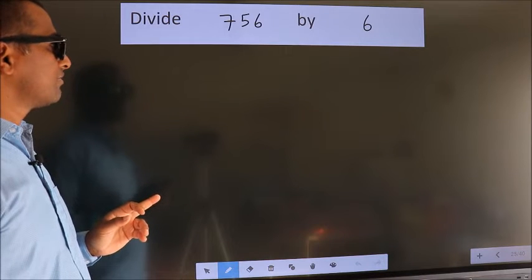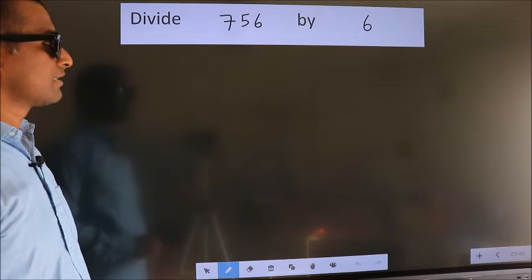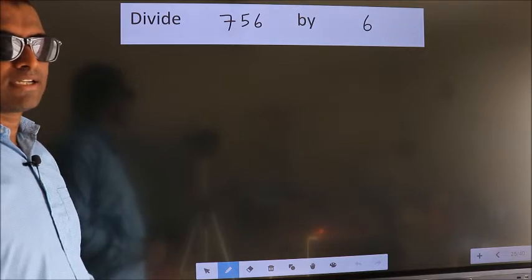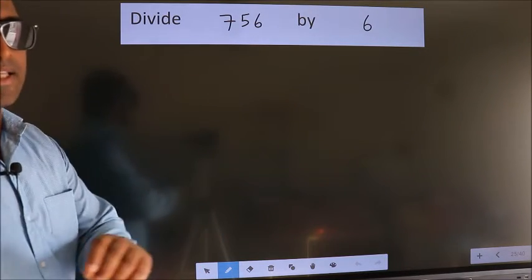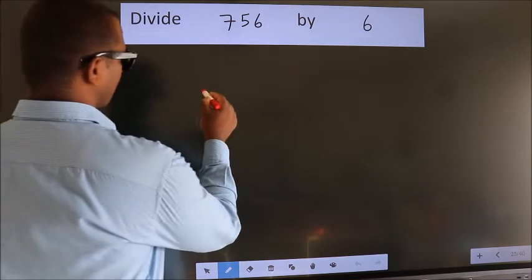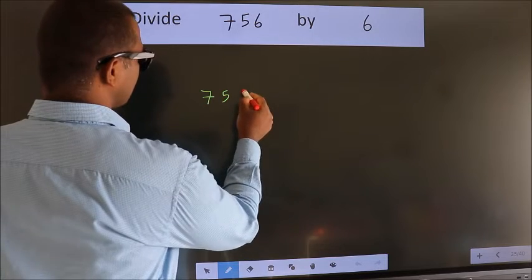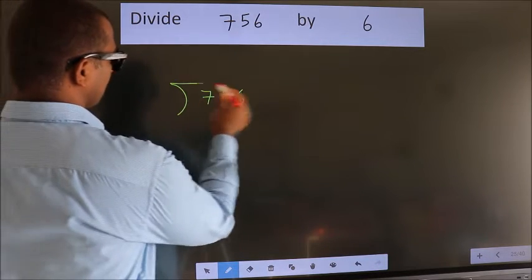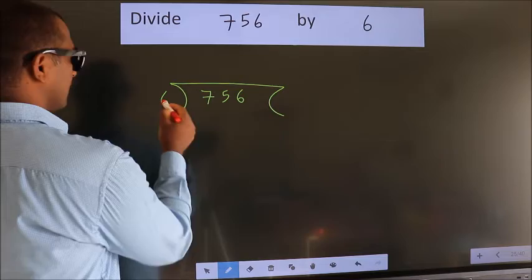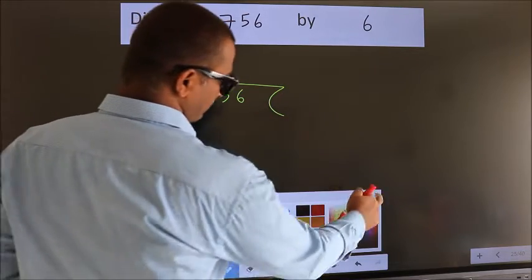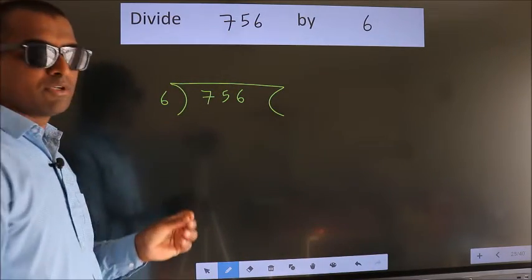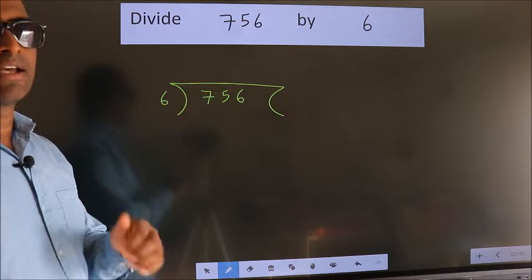Divide 756 by 6. To do this division, we should frame it in this way: 756 here, 6 here. This is your step 1. Next.